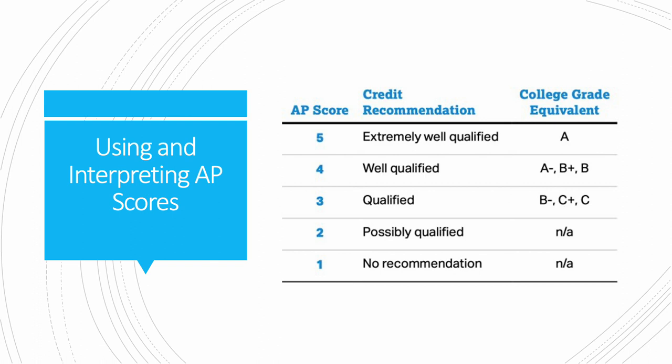AP scores range from 1 to 5, with 1 being the lowest and 5 the highest. A 5 is interpreted as a solid A — extremely well qualified. A 4 is well qualified, based on a range from A- to B, depending on whether it's a high 4 or a low 4. A 3 is qualified, ranging from B- to C. A 2 is possibly qualified, and a 1 is not recommended.